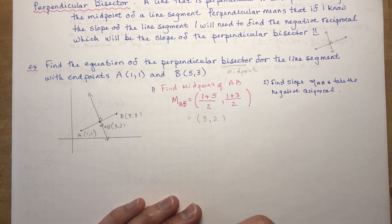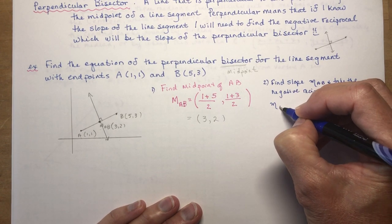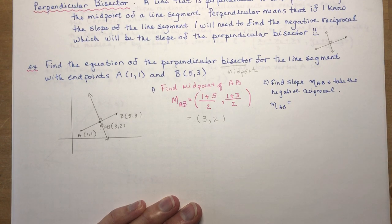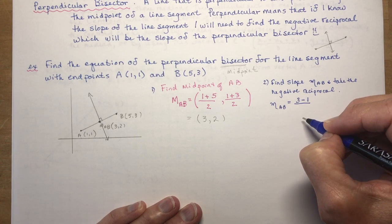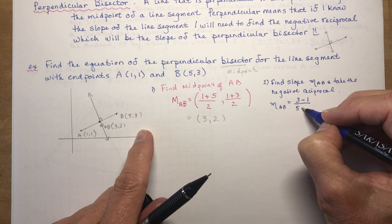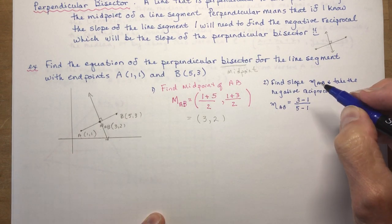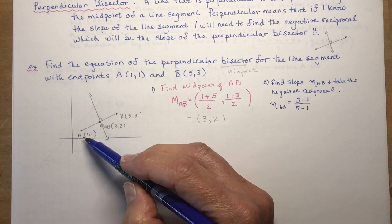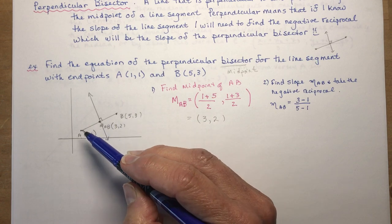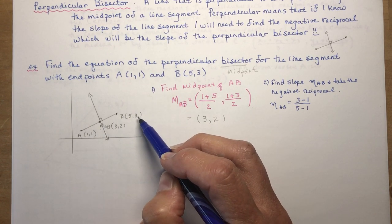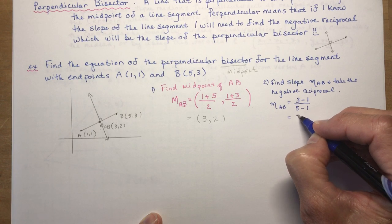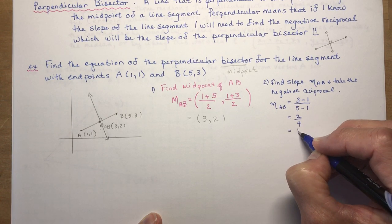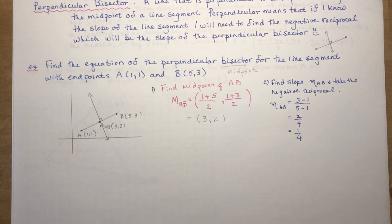What is the slope of AB? Rise over run — the y's are on top. So I have (3 minus 1) over (5 minus 1). Make sure you do it in the correct order. 3 minus 1 is 2, 5 minus 1 is 4, and 2/4 reduces to 1/2. So that's the slope of AB.